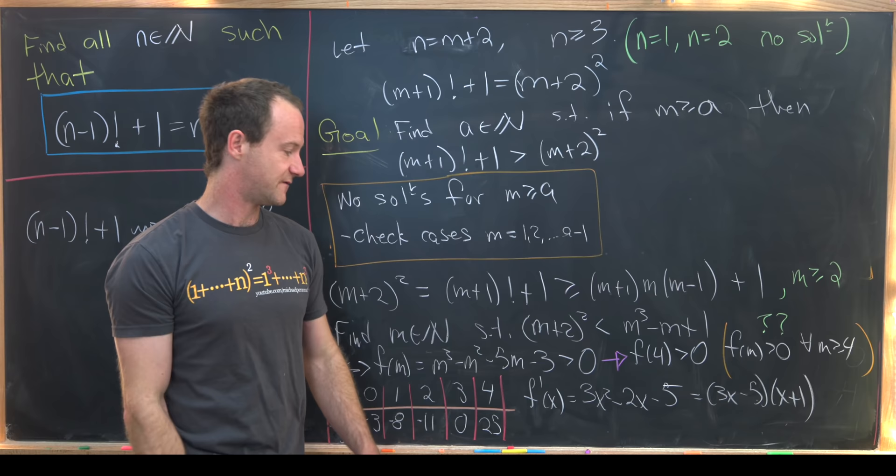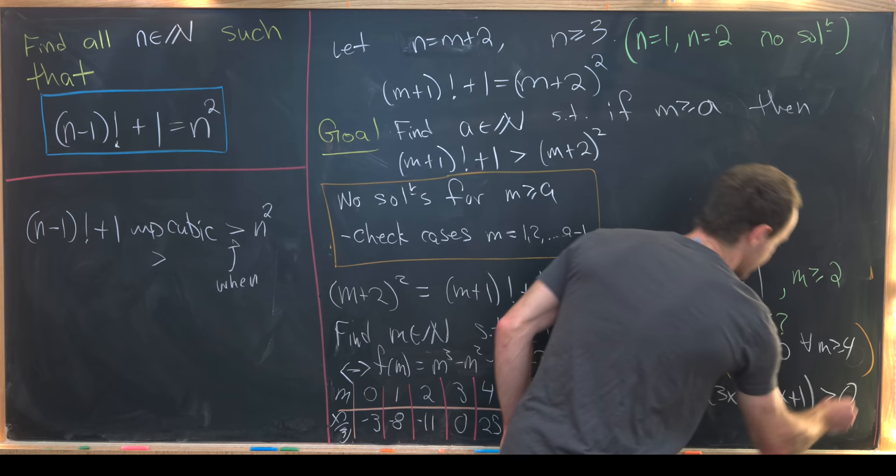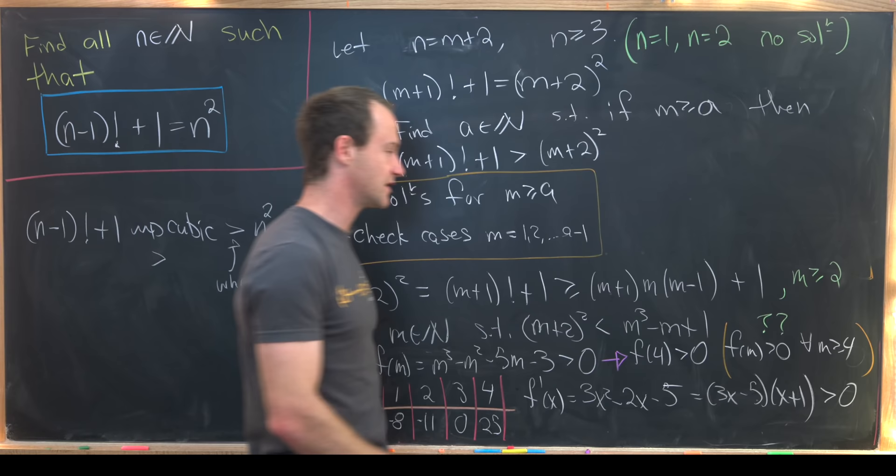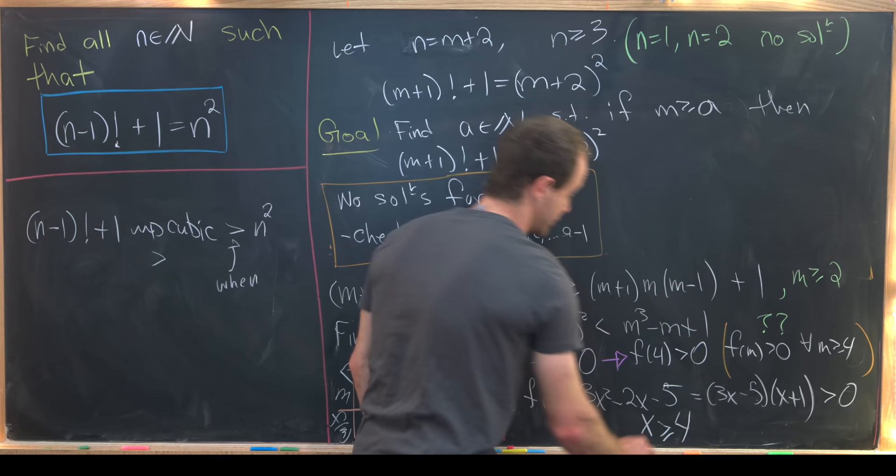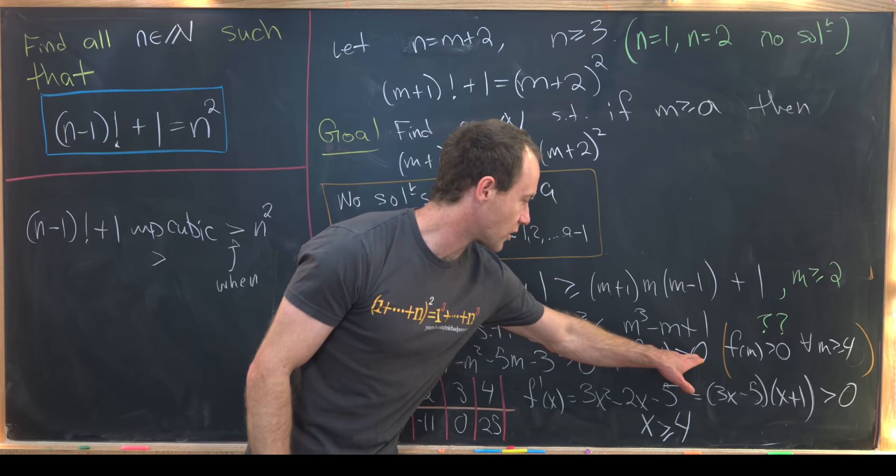Then it's easy to see that that has zeros at well negative 1 and then at 5 thirds. That means everything to the right of 5 thirds will give us a positive number for the derivative. But 4 is to the right of 5 thirds. So we've got f prime of x is bigger than 0 for all x bigger than or equal to 4.